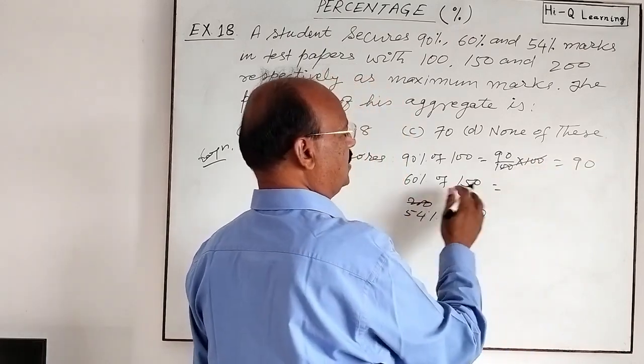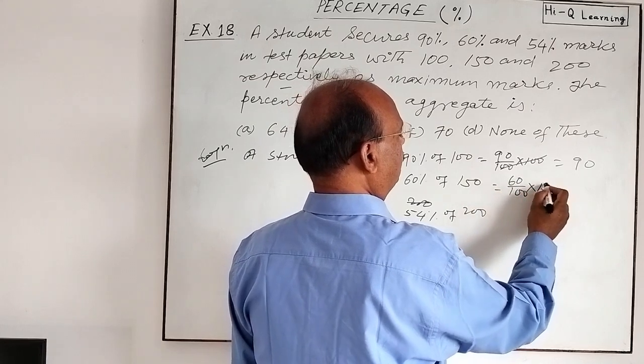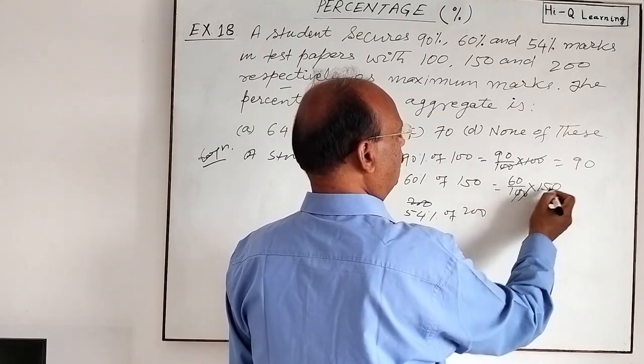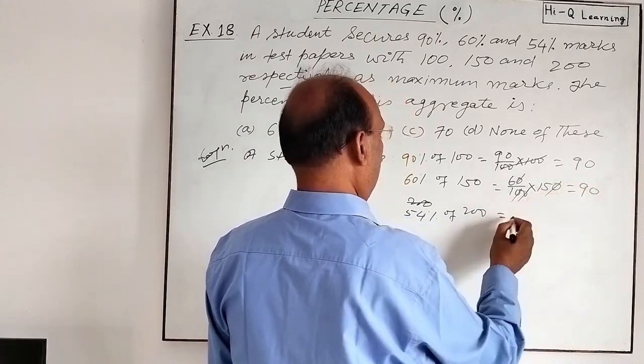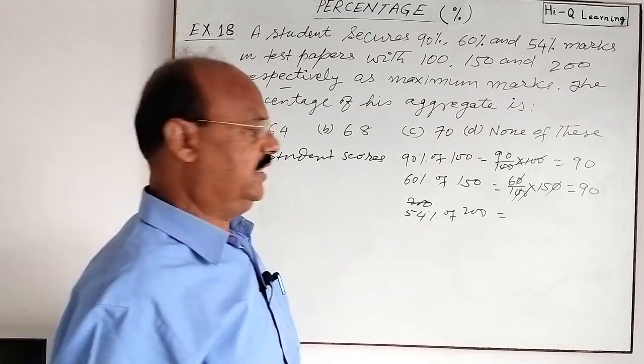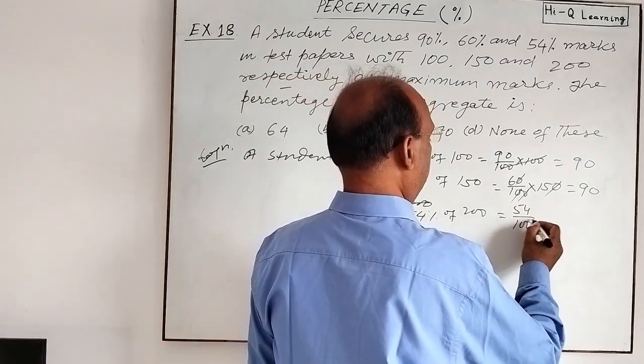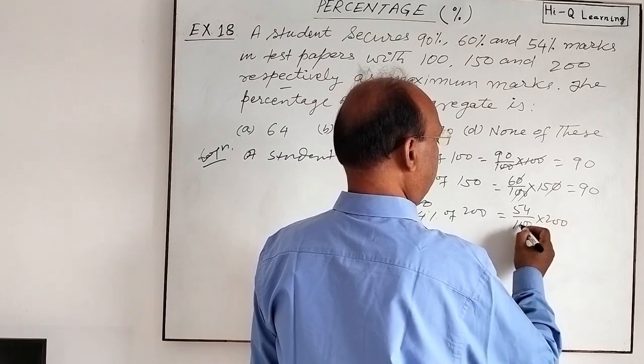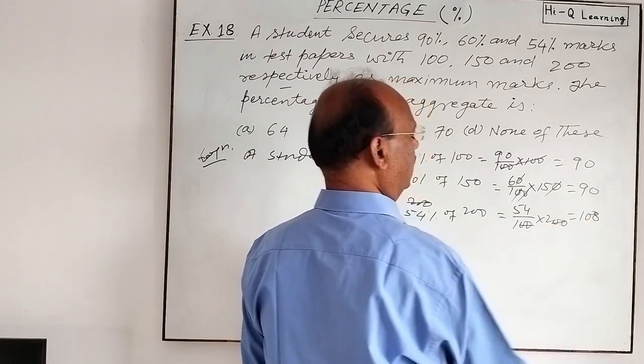60% of 150 means 60 by 100 into 150. Zero will be cancelled out, 90. So this is equal to 108.